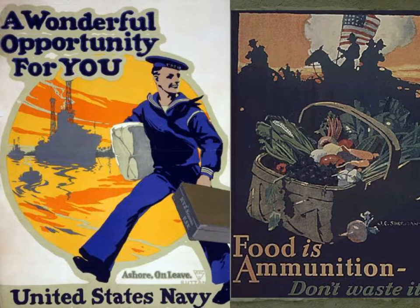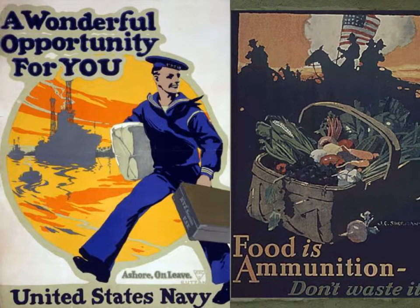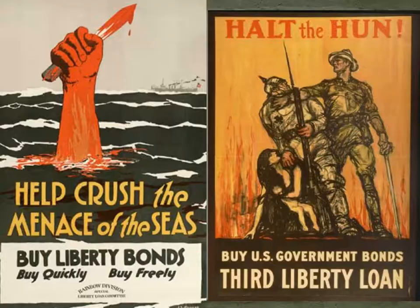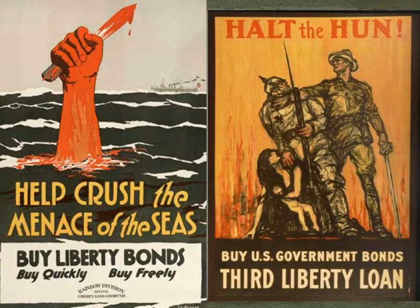For the poster on the left, discuss: who is this aimed towards, what might be exaggerated, what's the message? For the one on the right, think about who it's geared towards — who would really be dealing with food and things like that on the home front? For further posters: who do you think is the 'menace of the seas' and what does that mean? Who's the 'Hun,' what's happening in the image, who's the audience, and what is exaggerated?